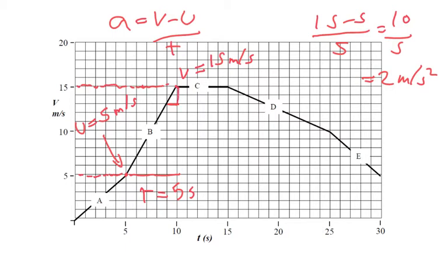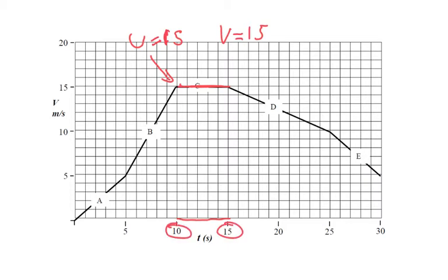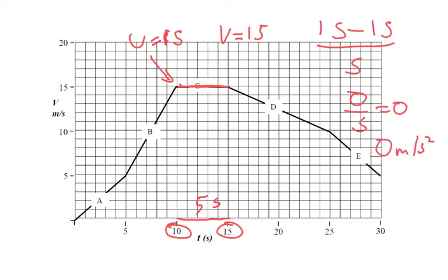Section C should have no acceleration. The initial velocity is 15 m/s and the final velocity is also 15 m/s, and the section takes 5 seconds (from 10 to 15 seconds). Using the formula: 15 minus 15 divided by 5 equals 0 over 5, which is 0 — so there's no acceleration in this section.